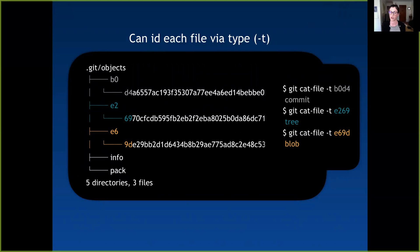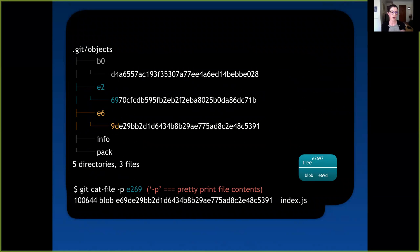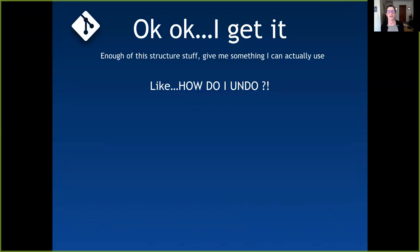You can try this out in your own terminal — you'll just need to install the tree command. On the right, I ran git cat-file -t on each object just to see the terminal output showing the exact words: blob, tree, and commit. If you run it with a reference to the first four characters of the hash, it'll tell you what each of those files is. I also printed the pretty-print contents of the tree, which shows the blob, its reference hash, and the file name.